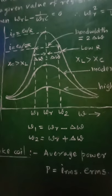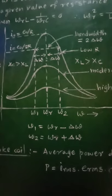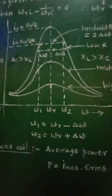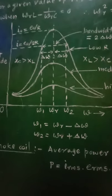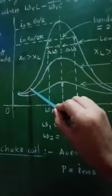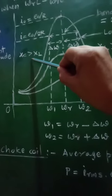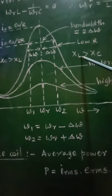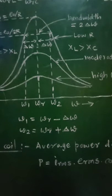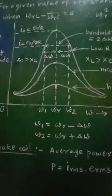From the graph it is clear that for lower angular frequencies, the resonance curve is dominated by capacitive reactance, and for higher angular frequencies it is dominated by inductive reactance. Now let us see what is the Q factor or quality factor.